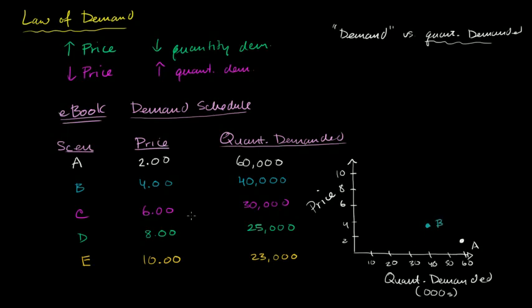Scenario C, $6, 30,000 units. $6, 30,000 units, right over there. Scenario C. Scenario D, $8, 25,000 units. $8, 25 is right about there. That looks like 25,000 right in between. That's close enough. So that right over there is scenario D.